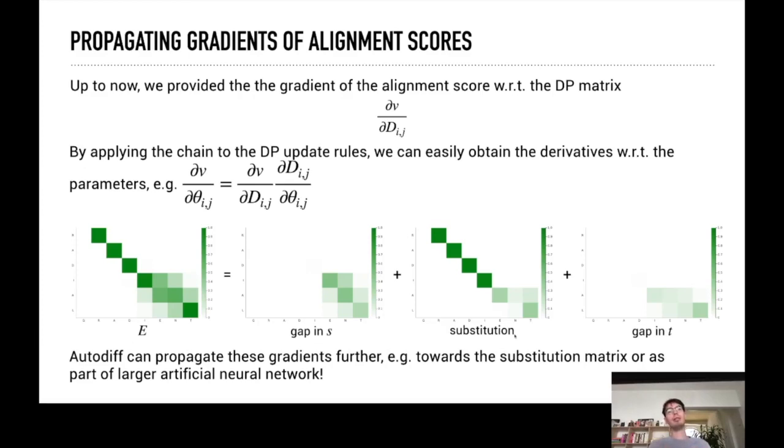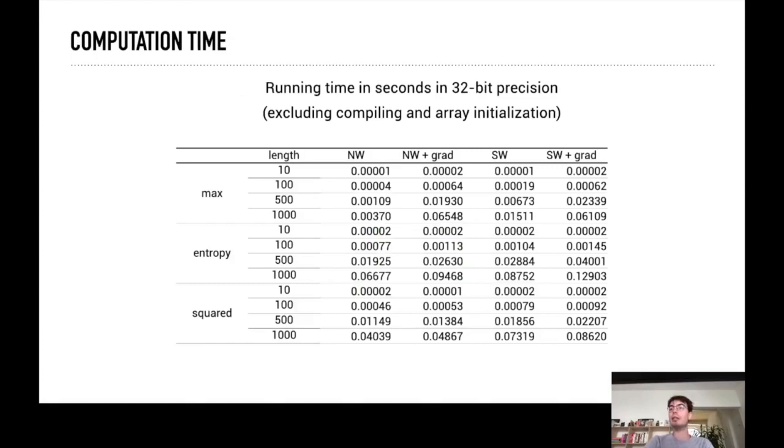But this can be plugged into automatic differentiation, so this means that you can use this differentiable sequence alignment as a layer in a larger neural network to really learn properties or predict sequences. So this works well, we have implemented this in a package and as you can see here it's quite performant. We only need a fraction of a second to align sequences of a thousand characters using the three proposed maximum operators, so this is good enough for bioinformatics applications definitely.